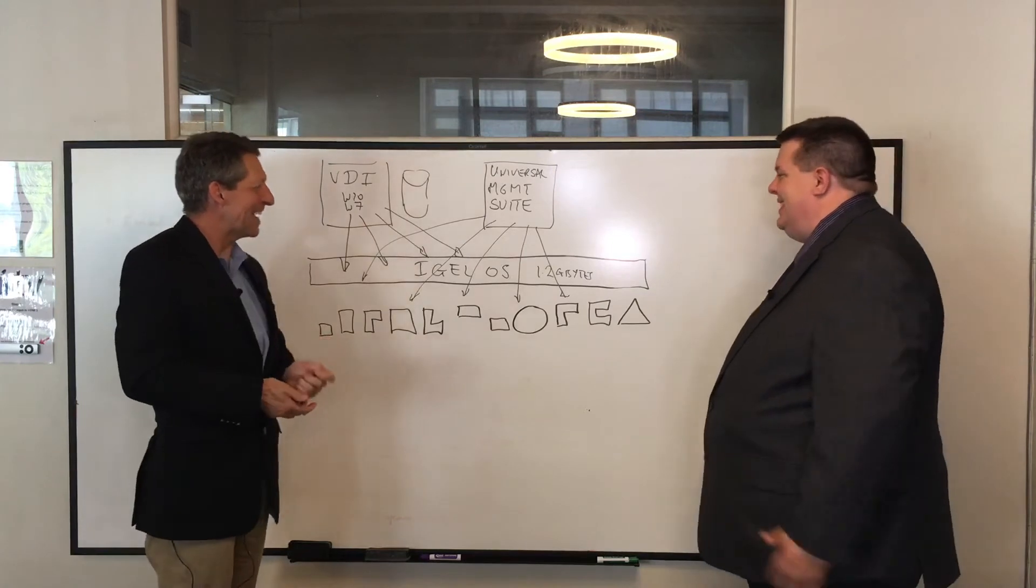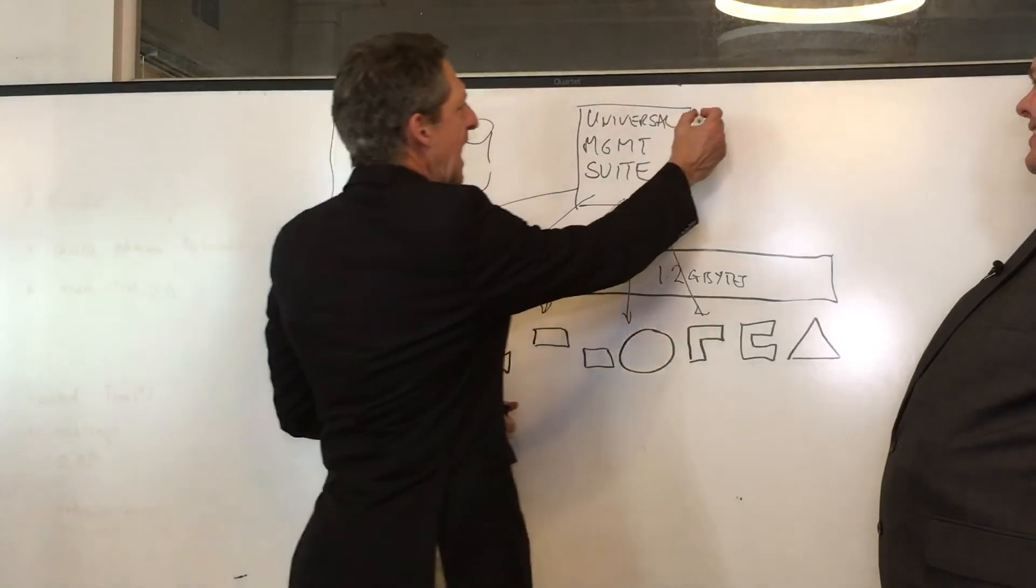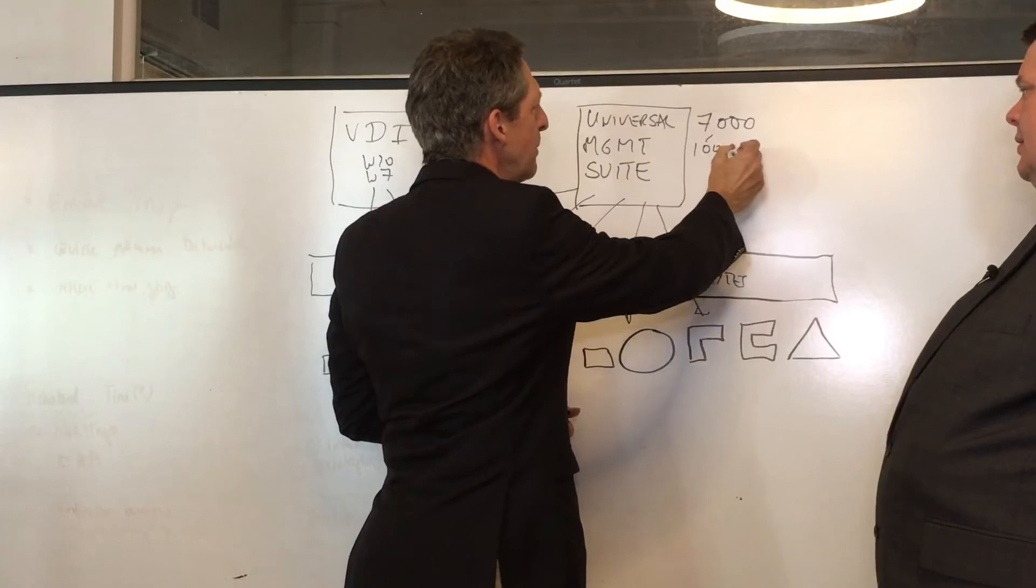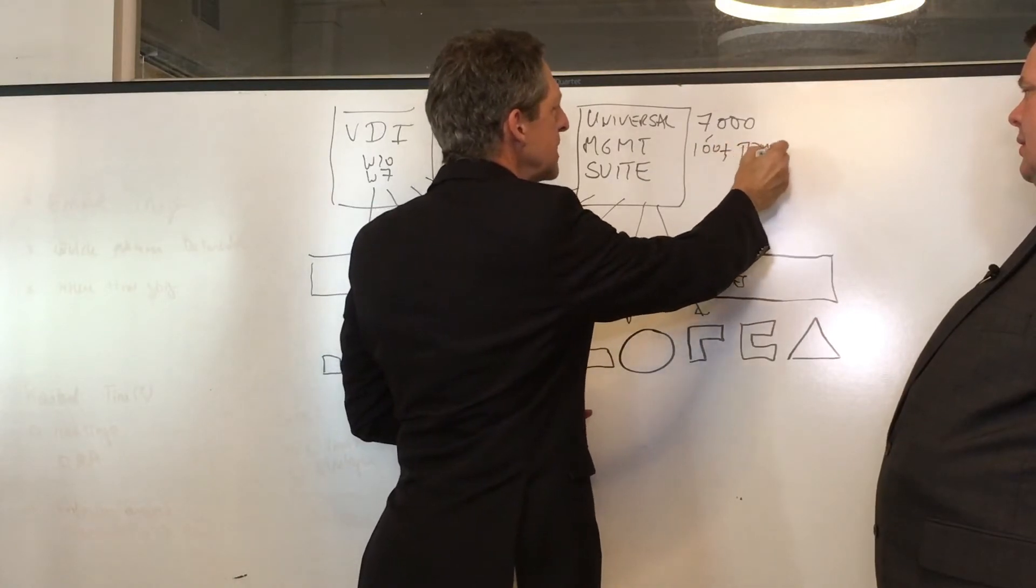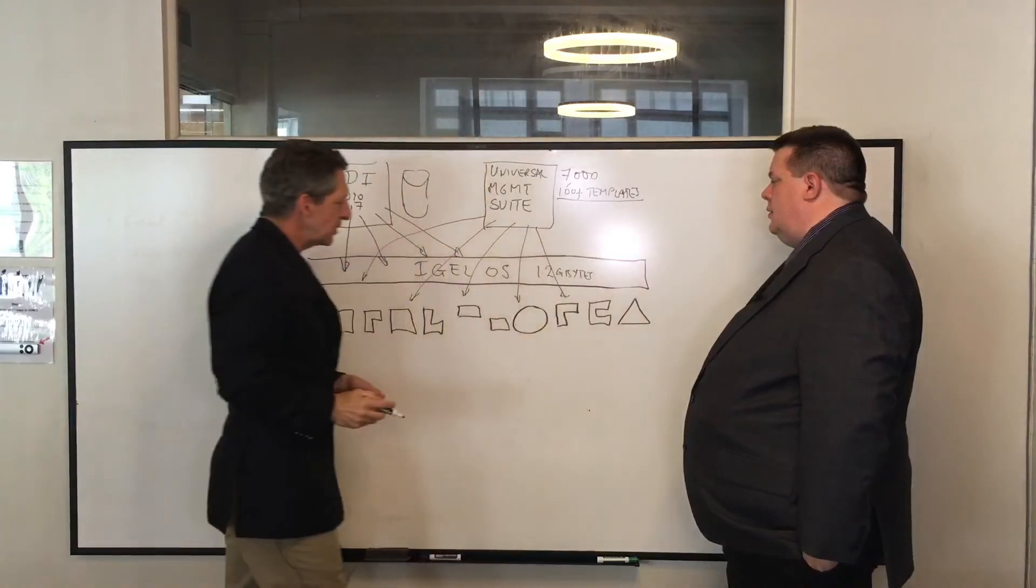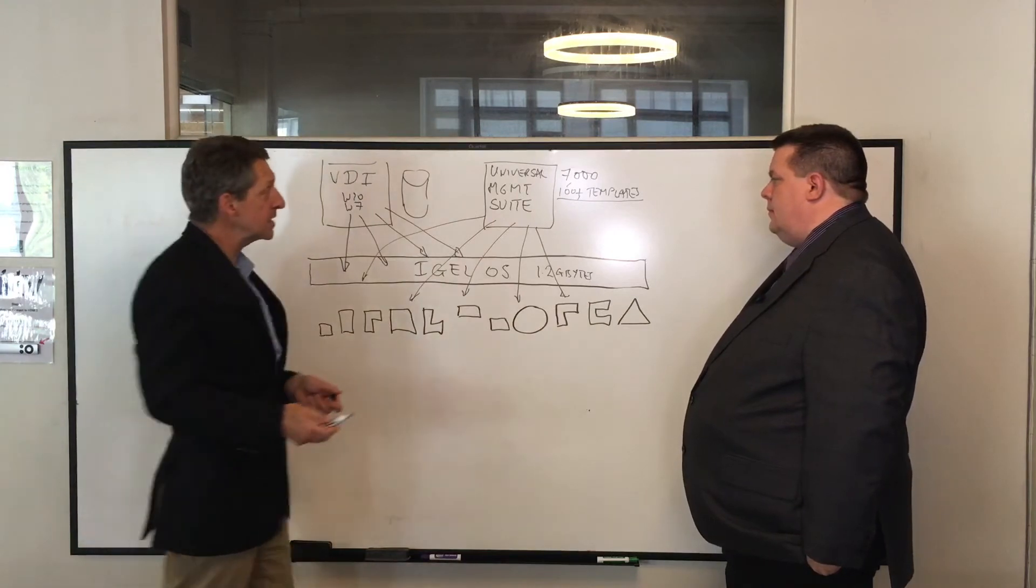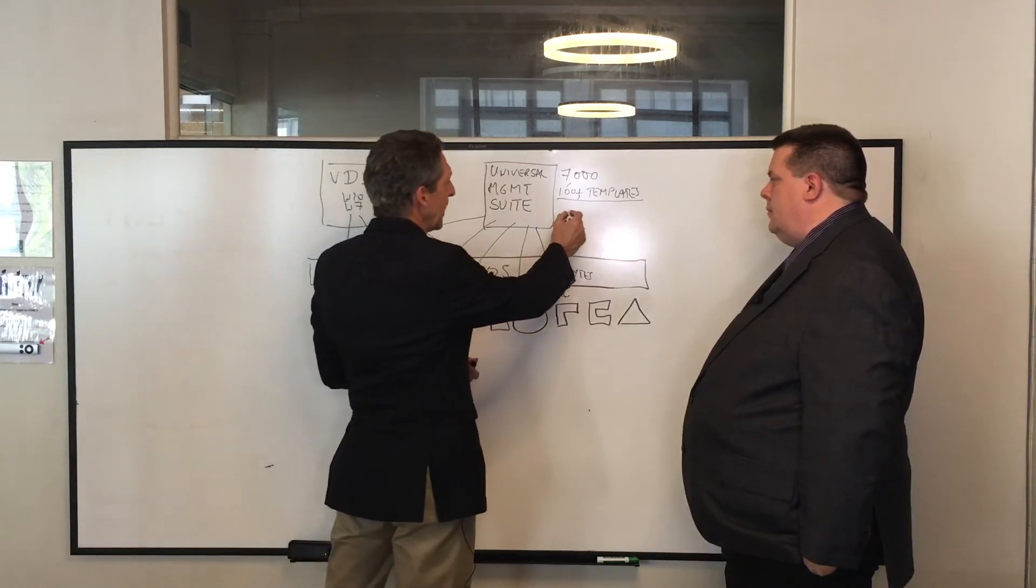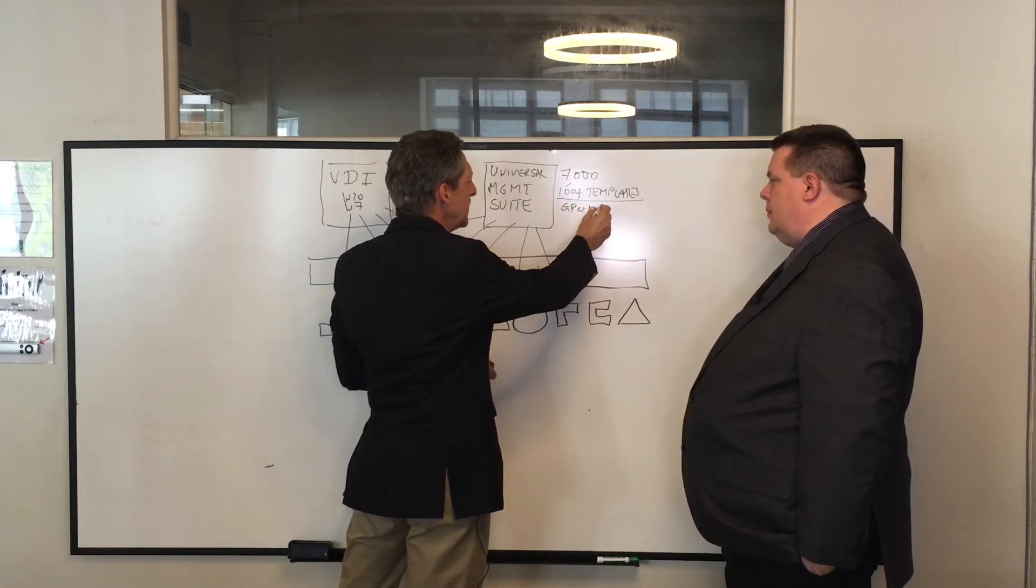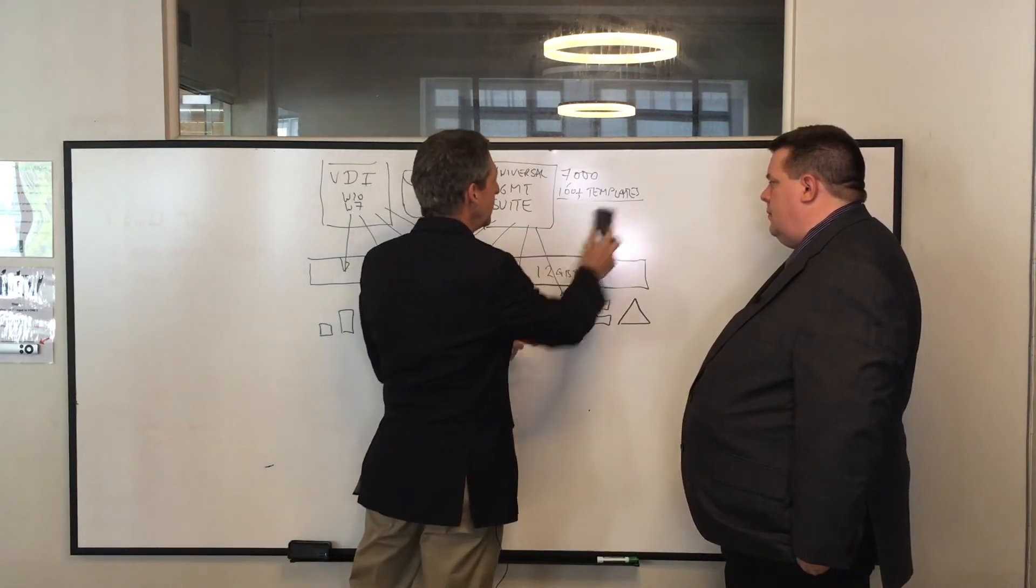And so, with this Universal Management Suite, we actually have about 7,000 control points, which we break down into about 100 plus templates, enabling you to give a highly effective management experience, managing all these endpoints and getting the most out of these endpoints. And what that actually looks like is essentially all the things you're used to with a GPO management suite and basically a folder structure that looks a little bit like this.